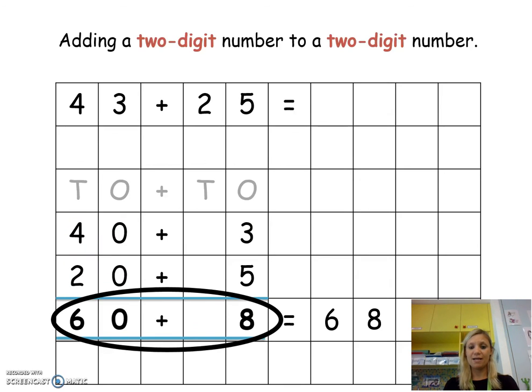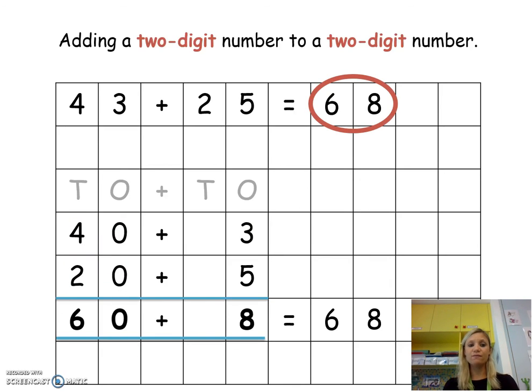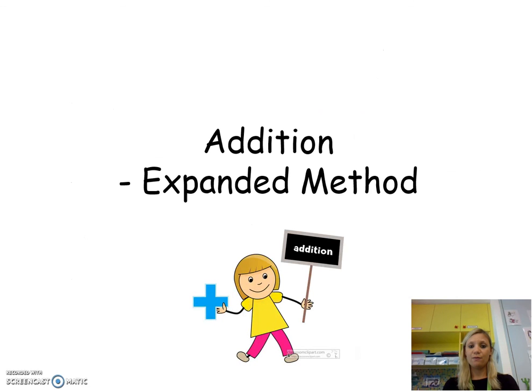So the final answer is 43 plus 25 equals 68. All right, and that is how you can do addition using the expanded method. Thank you for listening, bye!